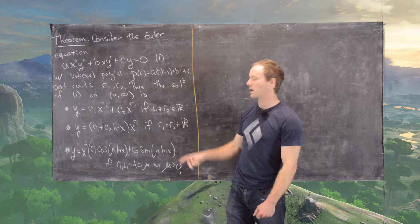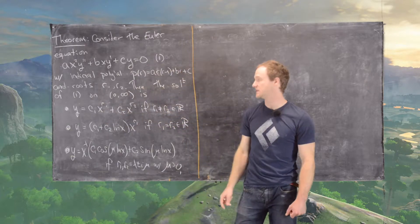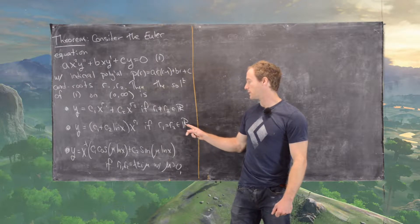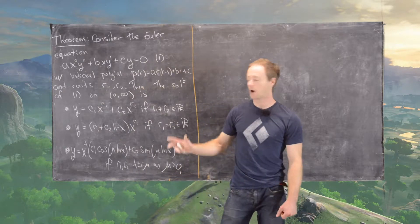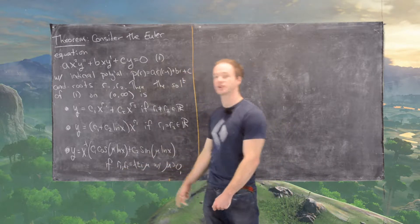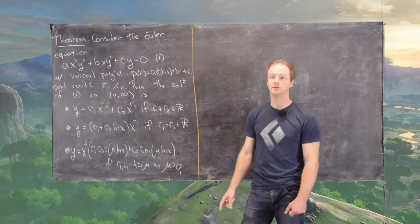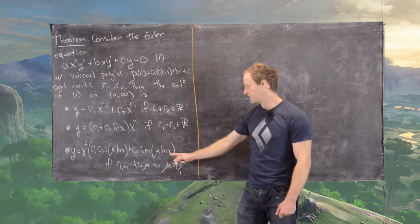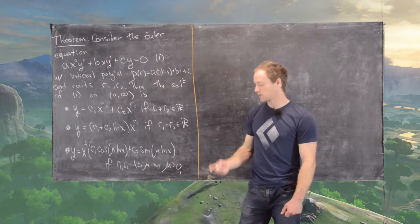If r1 and r2 are distinct real roots, we get the solution c1·x^r1 + c2·x^r2. If r1 and r2 are repeated real roots, we get (c1 + c2·ln x)·x^r1. And finally, if we have complex conjugate roots, we get x^λ·(c1·cos(μ ln x) + c2·sin(μ ln x)), where the complex conjugate is written so that μ is positive.